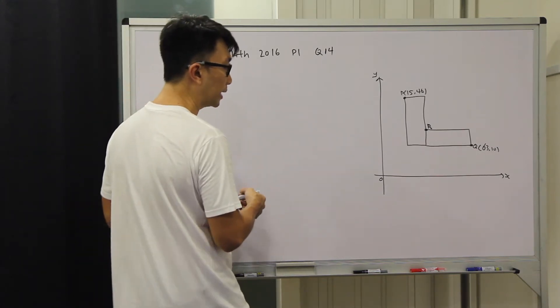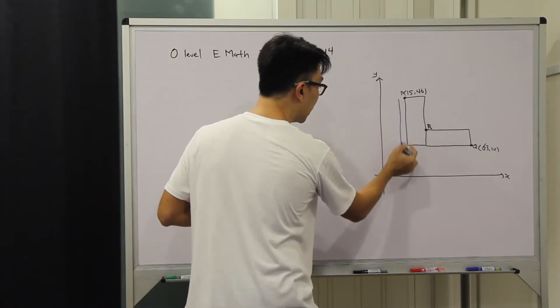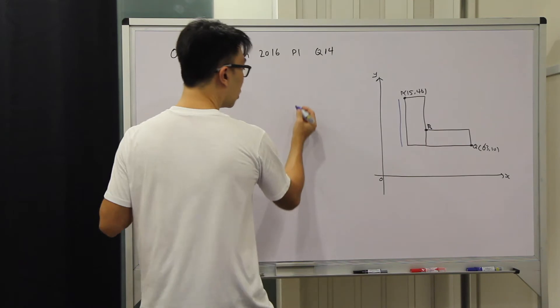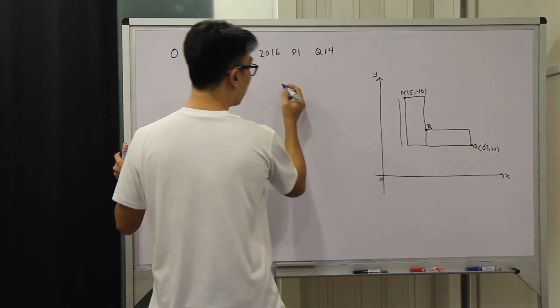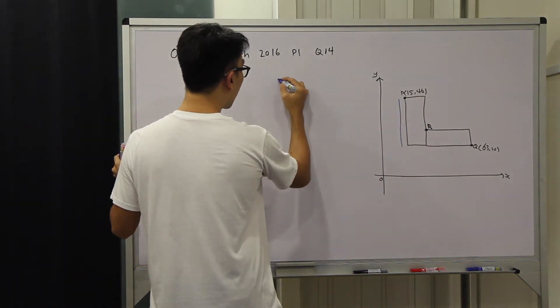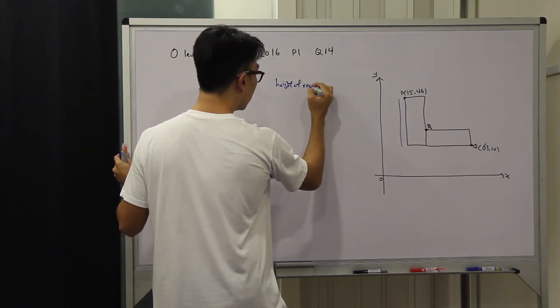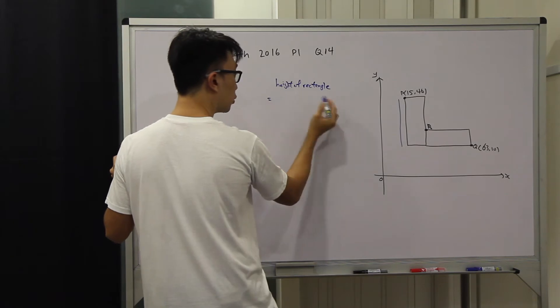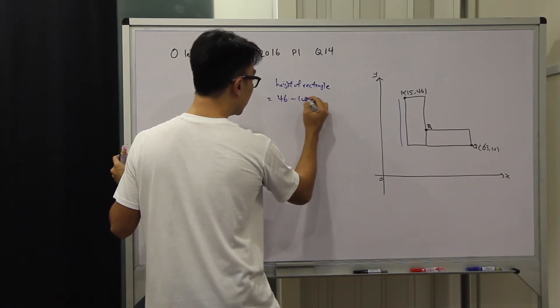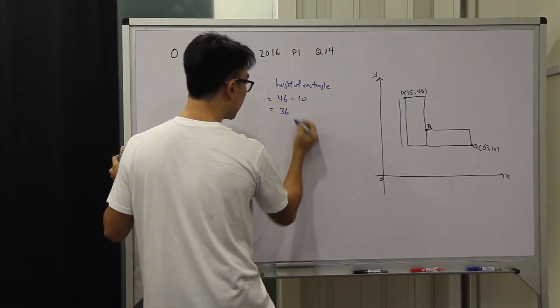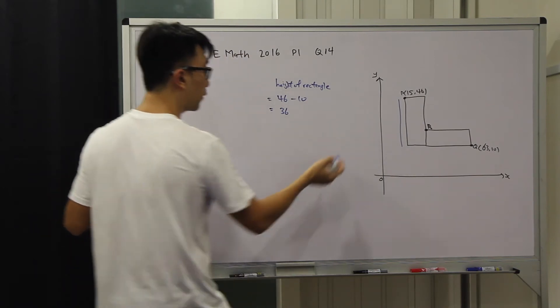First we can try to find the height of the rectangle. What we can do is use the y-coordinate of both points. So height of rectangle will be equal to 46 minus 10. That will give us 36.